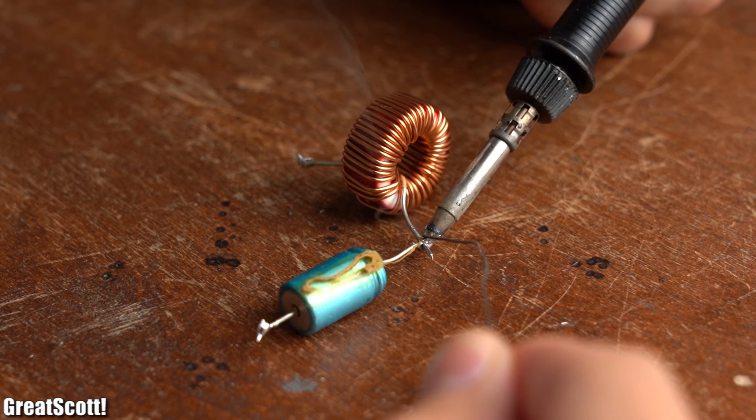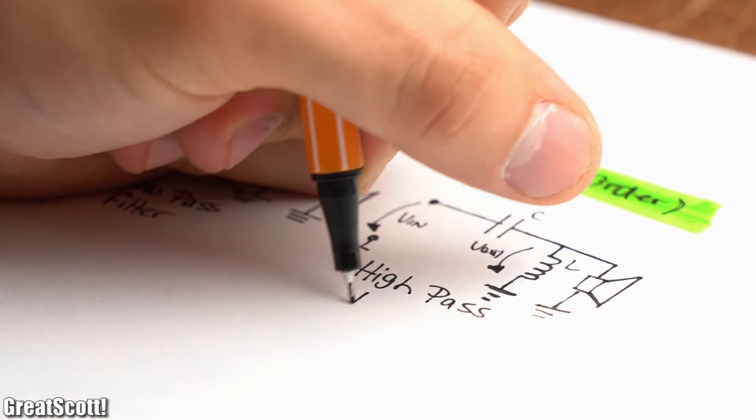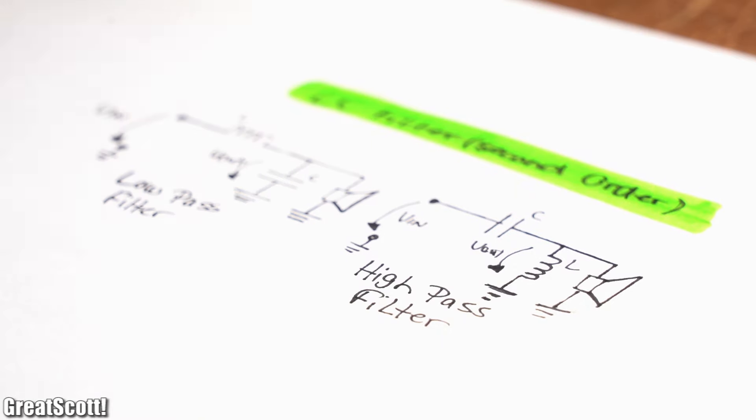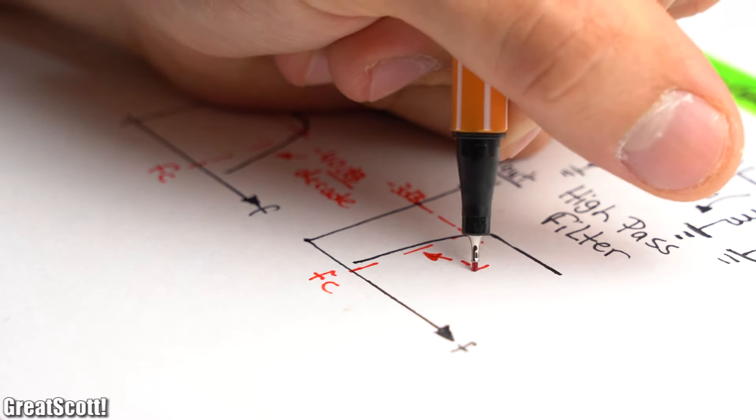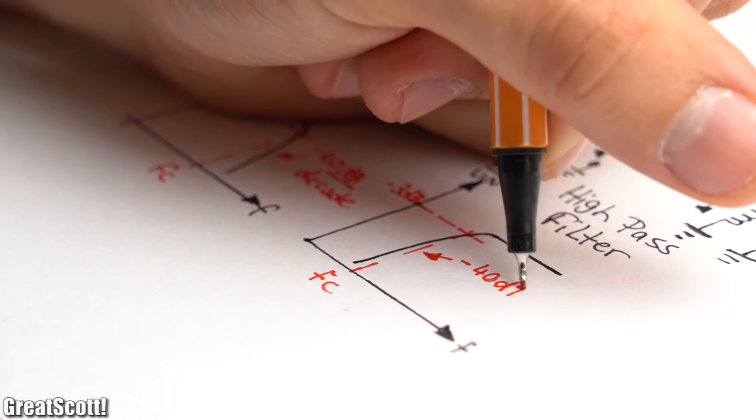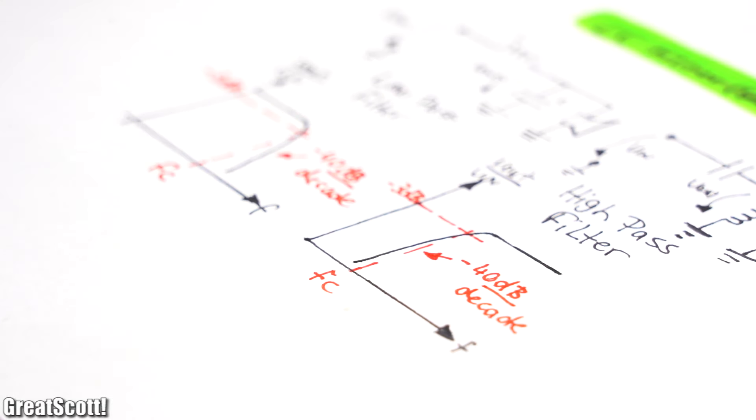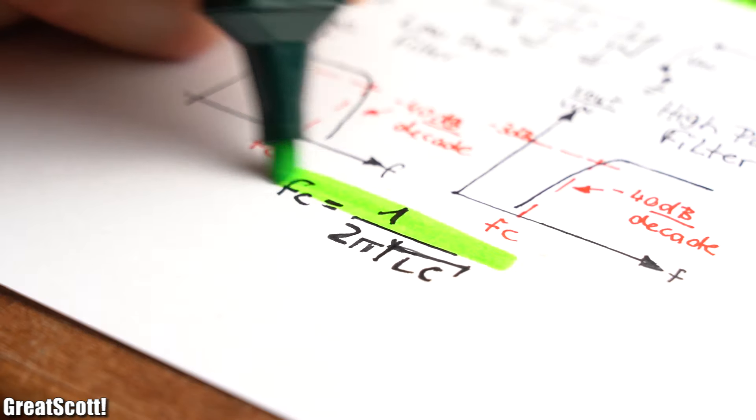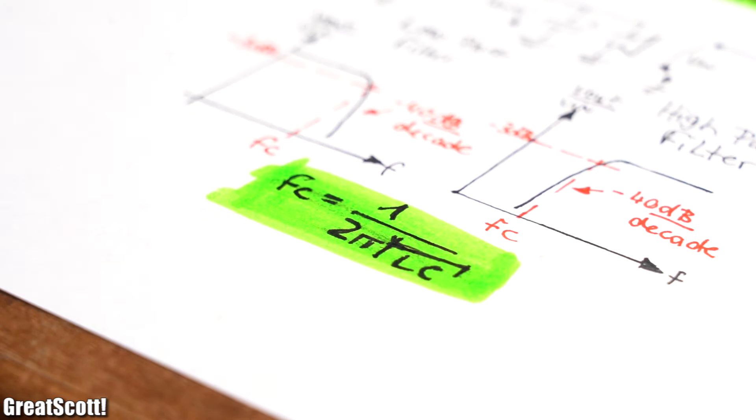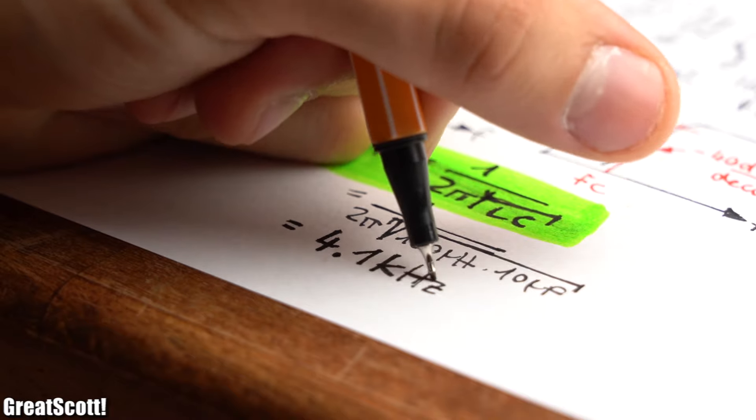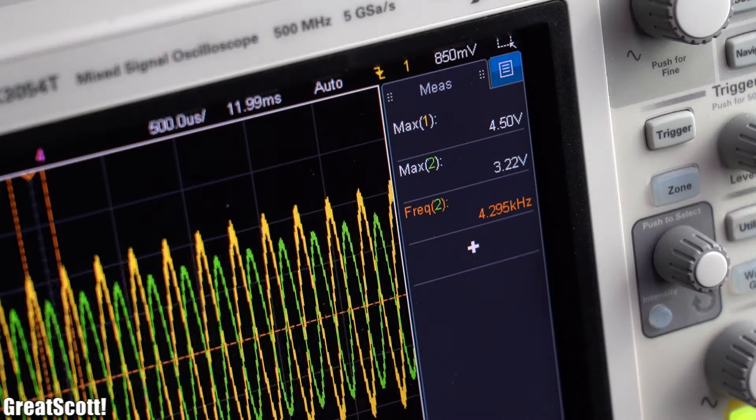So to get a second order filter, we can simply combine an inductor and capacitor to form an LC high-pass or LC low-pass filter. This way the damping increases to minus 40 dB per decade, which removes unwanted frequencies above or beneath the cutoff frequencies much quicker. And speaking of cutoff frequencies, the formula for the high-pass and low-pass is like always the same, and is for my simple example here around 4.1 kHz, which by doing another simple measurement seems to be correct.